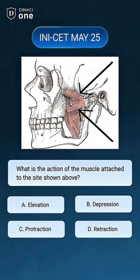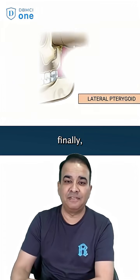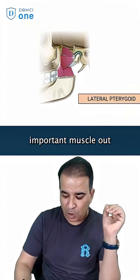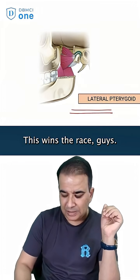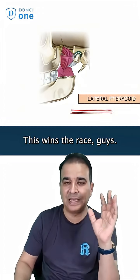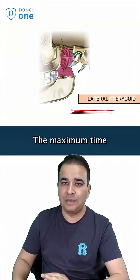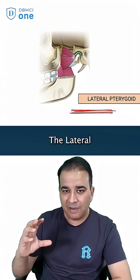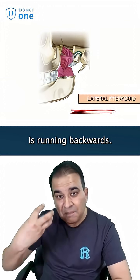What is the action of the muscle attached to the site shown above? The most important muscle out of all the muscles of mastication — this wins the race. The maximum time the question is asked is on the lateral pterygoid. The lateral pterygoid muscle is running backwards.